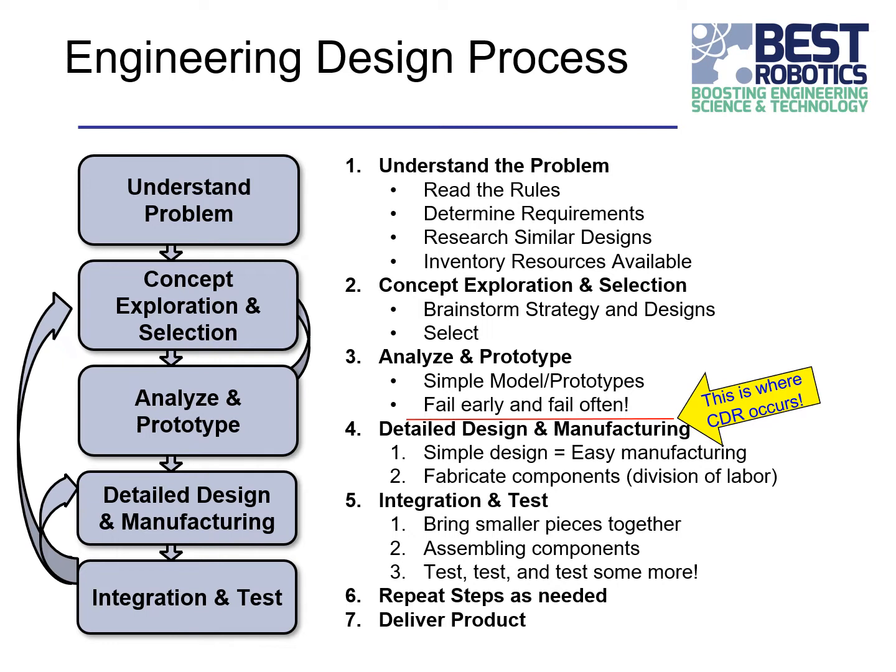Then you move to the next step: analyze and prototype. In this step, you create some simple models or prototypes, maybe out of cardboard, from any product you can come up with. The point is to see what may or may not work. Fail early, fail often is very much the truth — you just don't know if something's going to work until you try it, try something different, talk about why it failed, modify that design a little bit, and move on. When you think you've got a robot design you'd like to pursue and actually manufacture, come down with the detailed design and manufacture it. That's where the CDR occurs.